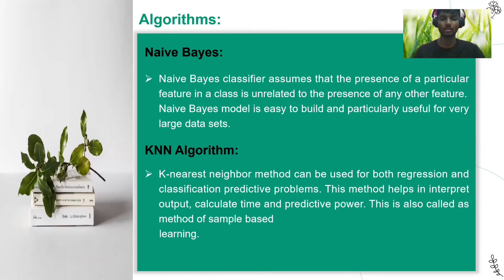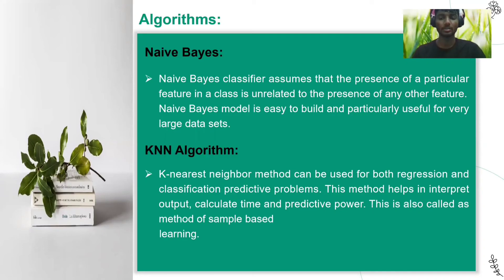After the Naive Bayes algorithm, the KNN — K-Nearest Neighbor — algorithm is used for both regression and classification prediction problems. This method helps to interpret output, calculate time, and predict power. It is also used as a method of instance-based learning.